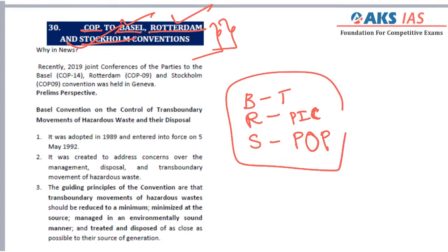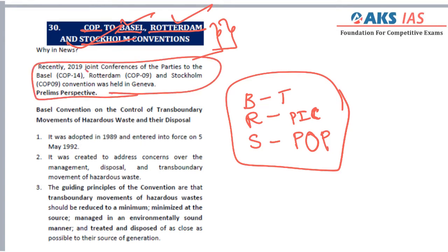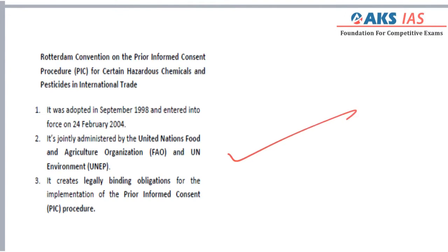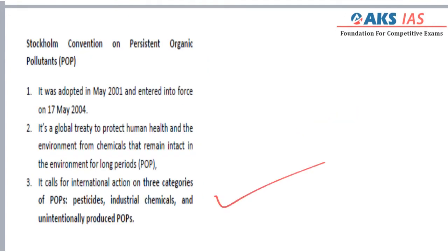These are important from the prelims perspective. The context here is that the Joint Conference of Parties was held in 2019, which is why these conventions are in the news. The details of all three conventions are given in the material.